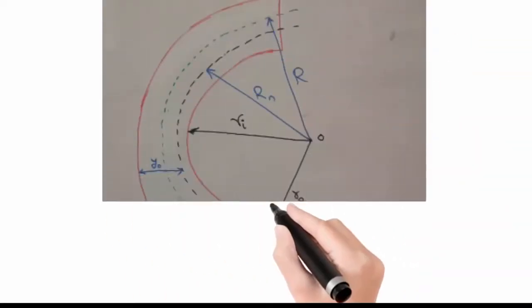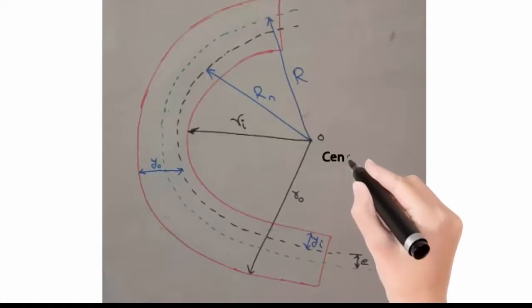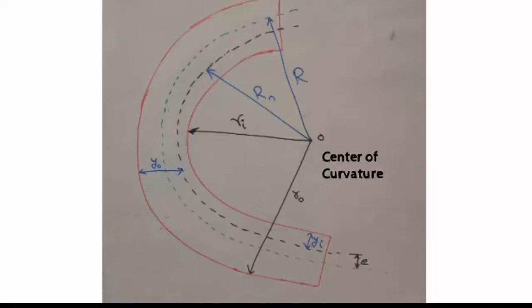What is shown here is a curved beam example. As you can see, the member is curved and has a curvature axis, O, which is the center of curvature. The neutral axis and centroidal axis are different.